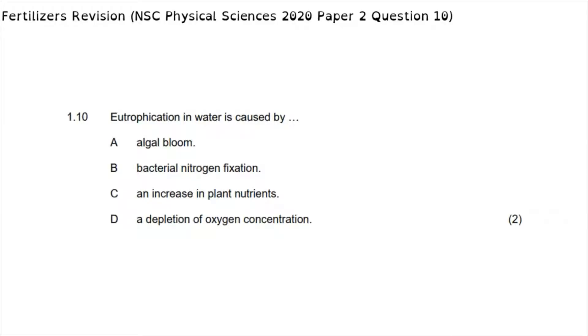The fertilizer section of the chemistry paper starts with question 1.10, which reads: eutrophication in water is caused by. We know that eutrophication is the increase in plant nutrients that forms in the water that can lead to things like algal bloom. By knowing the theory here, we know that option C is the correct answer because when the plant nutrients increase, it builds up in the water which can then lead to algal bloom. So the correct answer to 1.10 is C.